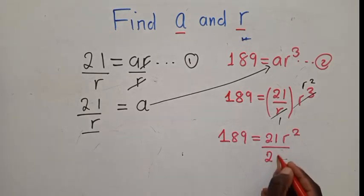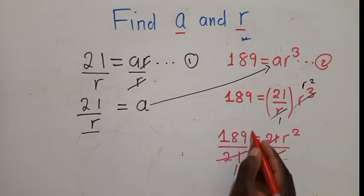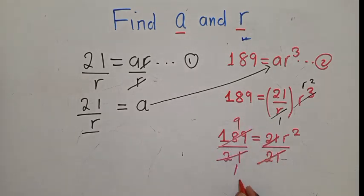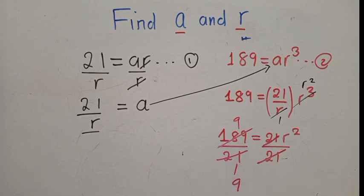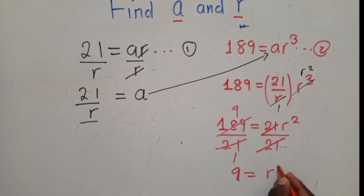Divide by 21 because we are solving for r. So this and this will go. 21 into 21 is 1, into 189 it will give us 9. So we've got 9 equals r to the power 2.